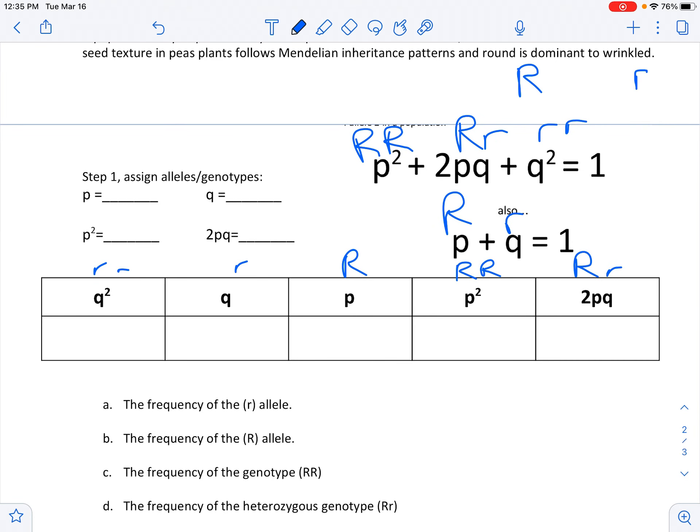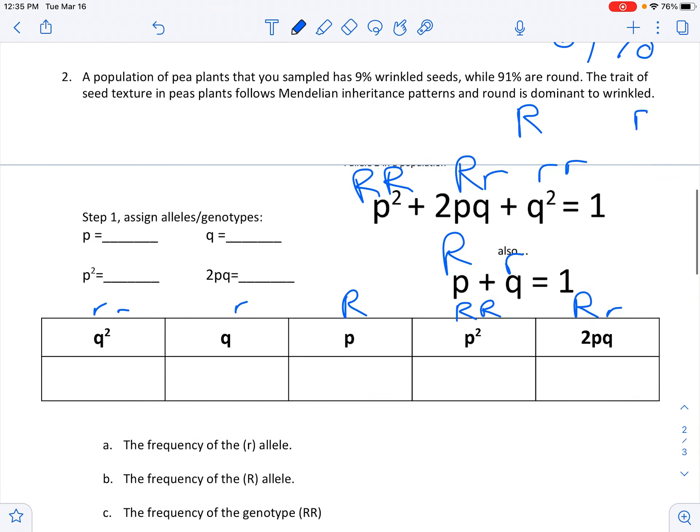So go ahead and fill out the chart. What is the little r, little r genotype frequency? 9% have wrinkled seeds, 91% are round. Wrinkled would be the little r, little r genotype, whereas round would either be big R, big R, or big R, little r genotype, because it's a Mendelian dominant inheritance pattern.